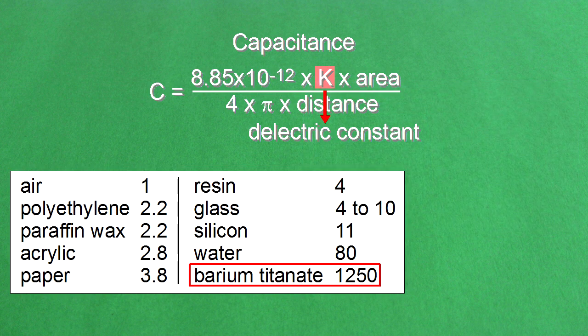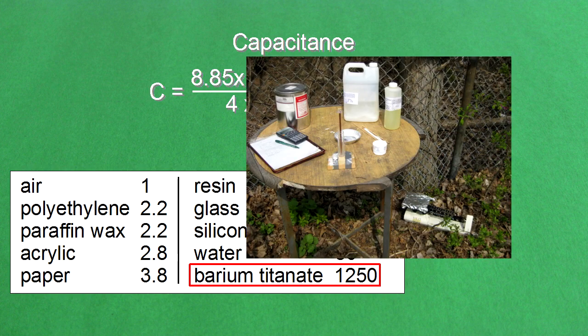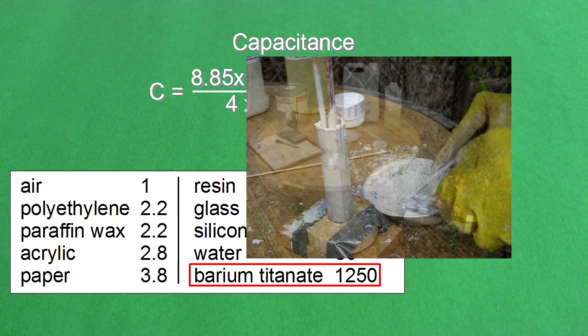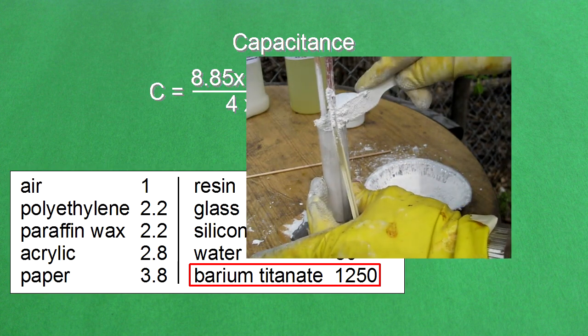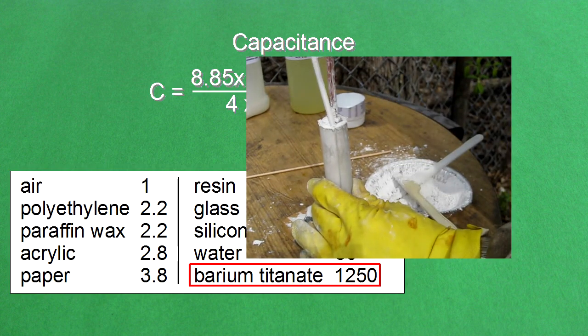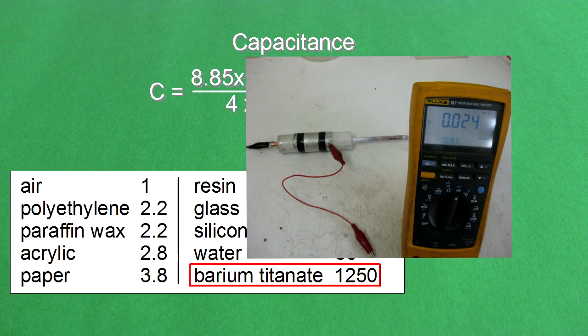I've tried making high dielectric constant capacitors using barium titanate, but it's hard to do unless you have a way of compressing it under high temperatures. I've tried mixing barium titanate and epoxy, and the highest I've gotten was 27. There's a link in the description to this video where you can find more about my efforts with barium titanate.